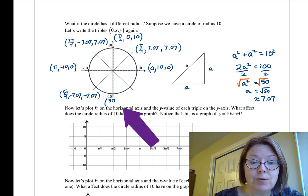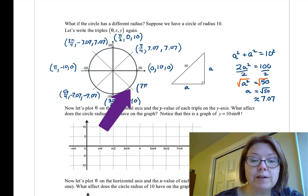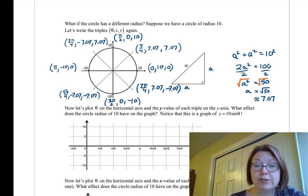3π over 2, 0 for x, negative 10 for y. And 7π over 4, positive 7.07 for x, negative 7.07 for y. So there are my triples.